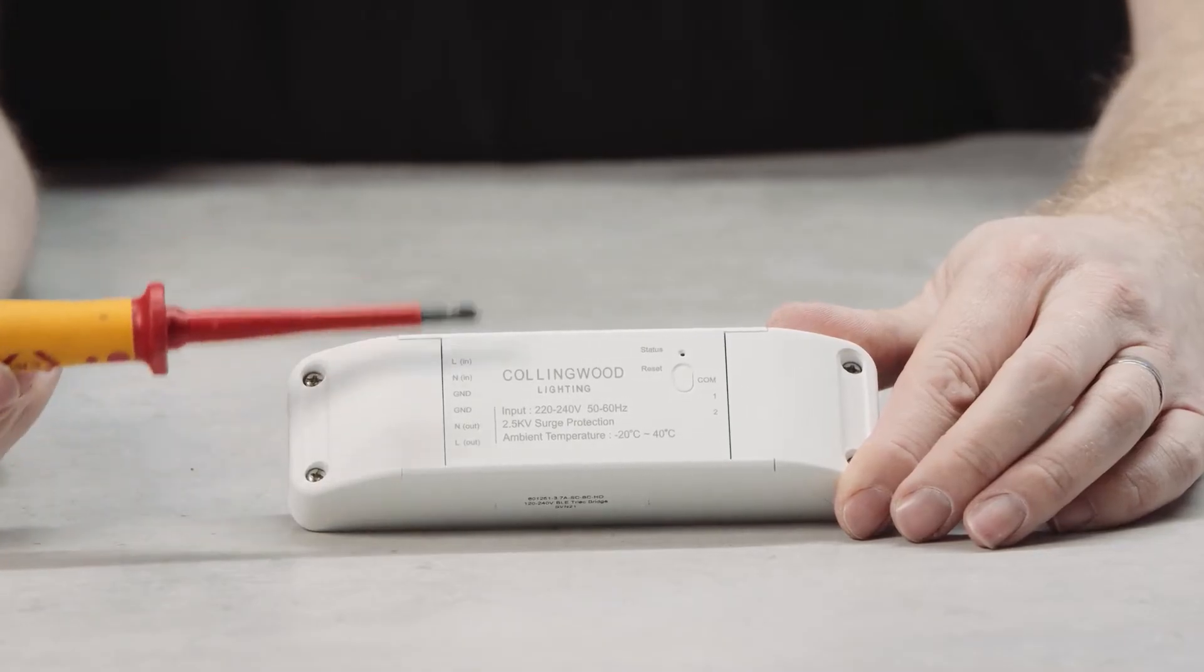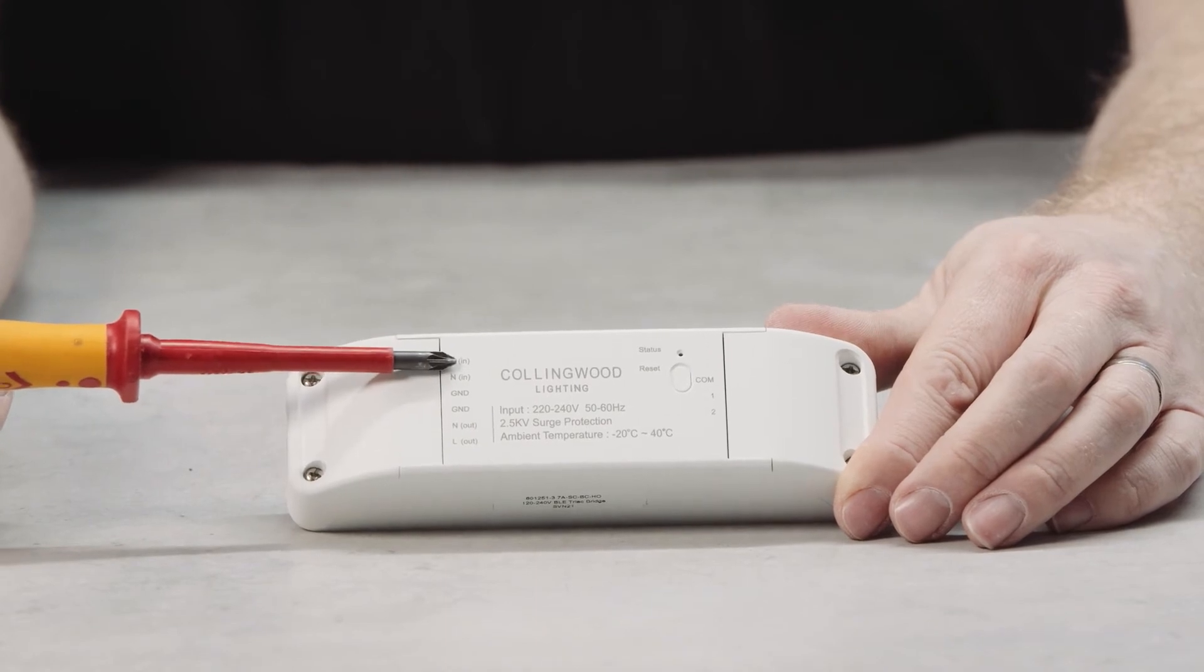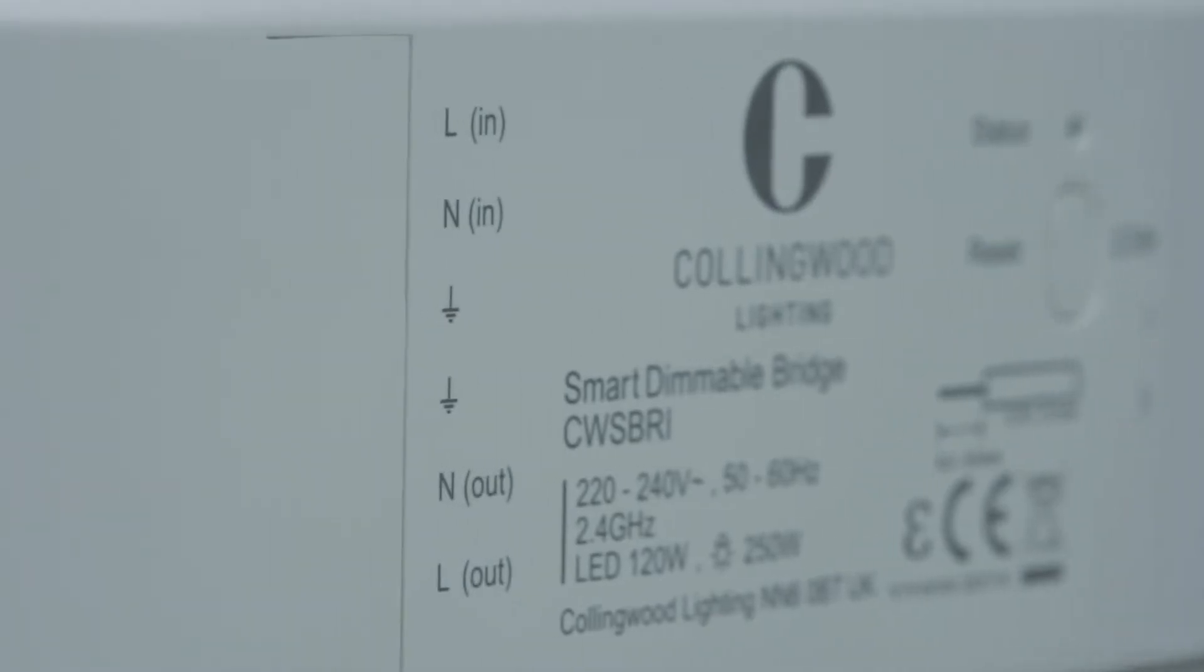When wiring up to a circuit with a standard on-off rocker switch, use the terminals on the left hand side with live in and live out.